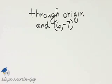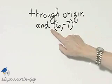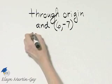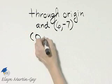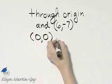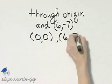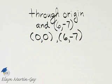We'd like to write an equation of the line through the origin and this point. Now, what are the coordinates of the origin? Remember, the origin has coordinates 0, 0, and then also we have this given point, 6, negative 7. So I'm interested in the line that goes through these two points.